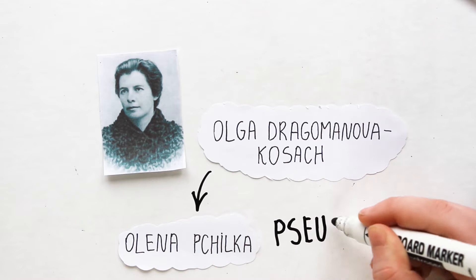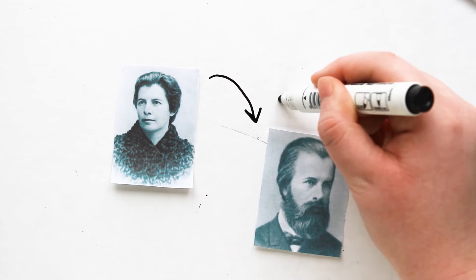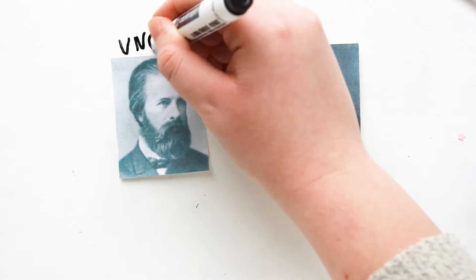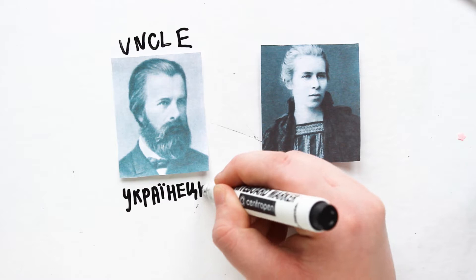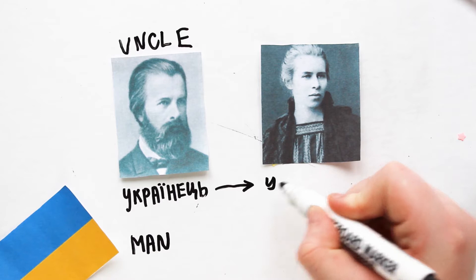And her brother, Lesya's uncle, Mikhail Dragoman, was a folklorist and a public figure. It was he whom young Larissa borrowed a pseudonym from, because her uncle always signed Ukrainets, that means a Ukrainian man.